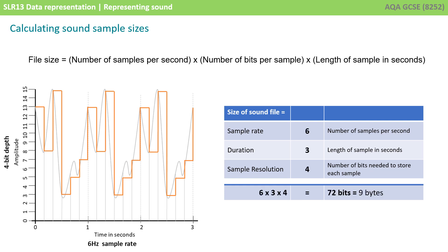If we take the example of the graph shown on the left, we have a sample rate of 6 hertz. This analog waveform is being recorded or captured 6 times a second. We have a duration of 3 seconds.